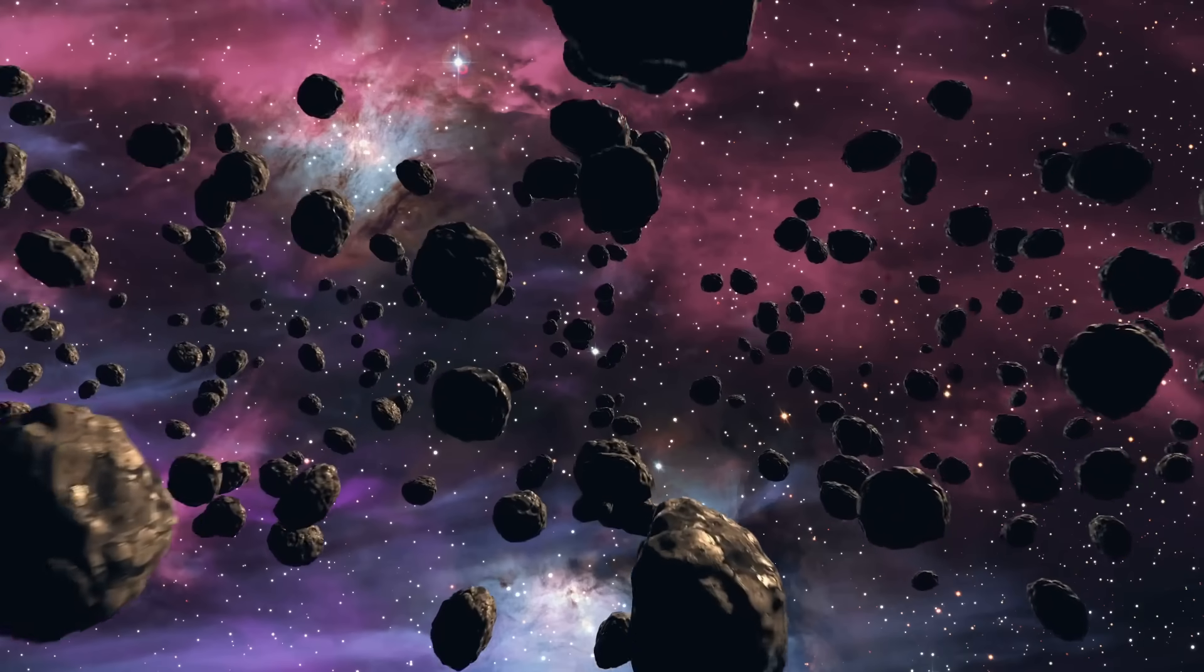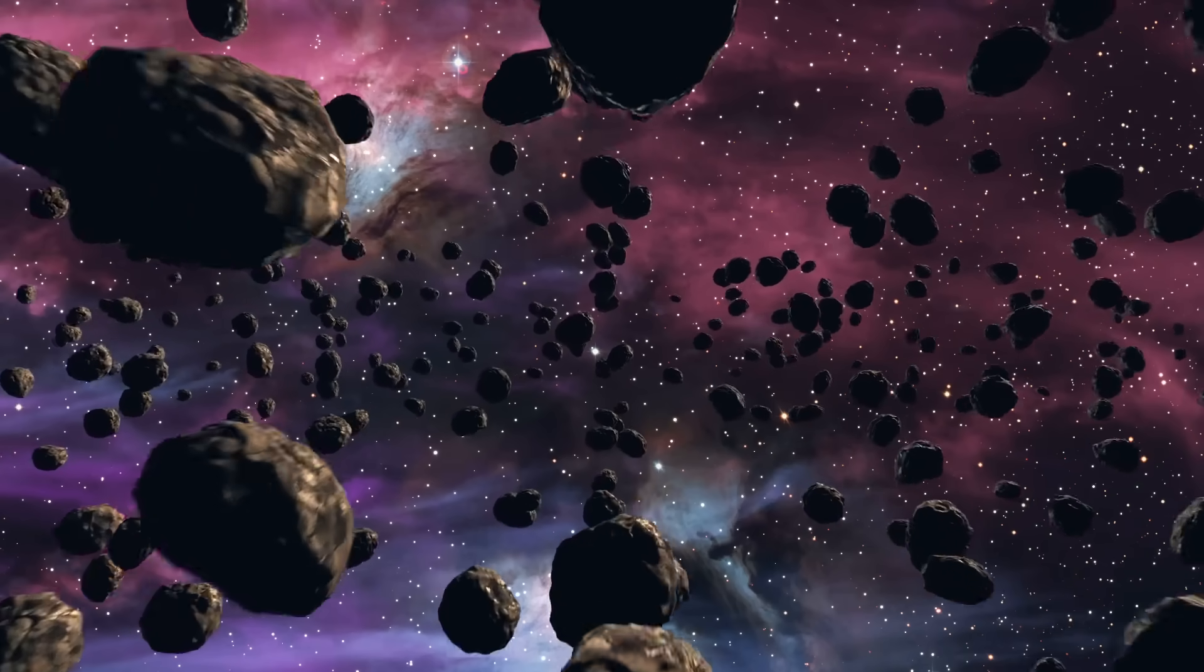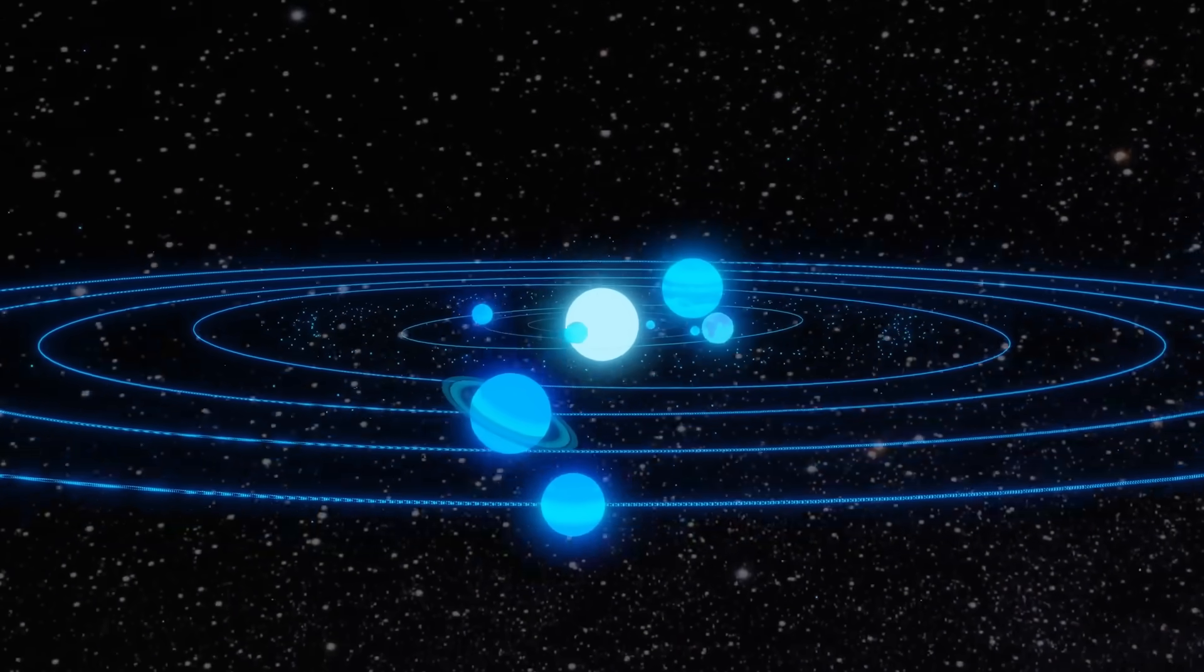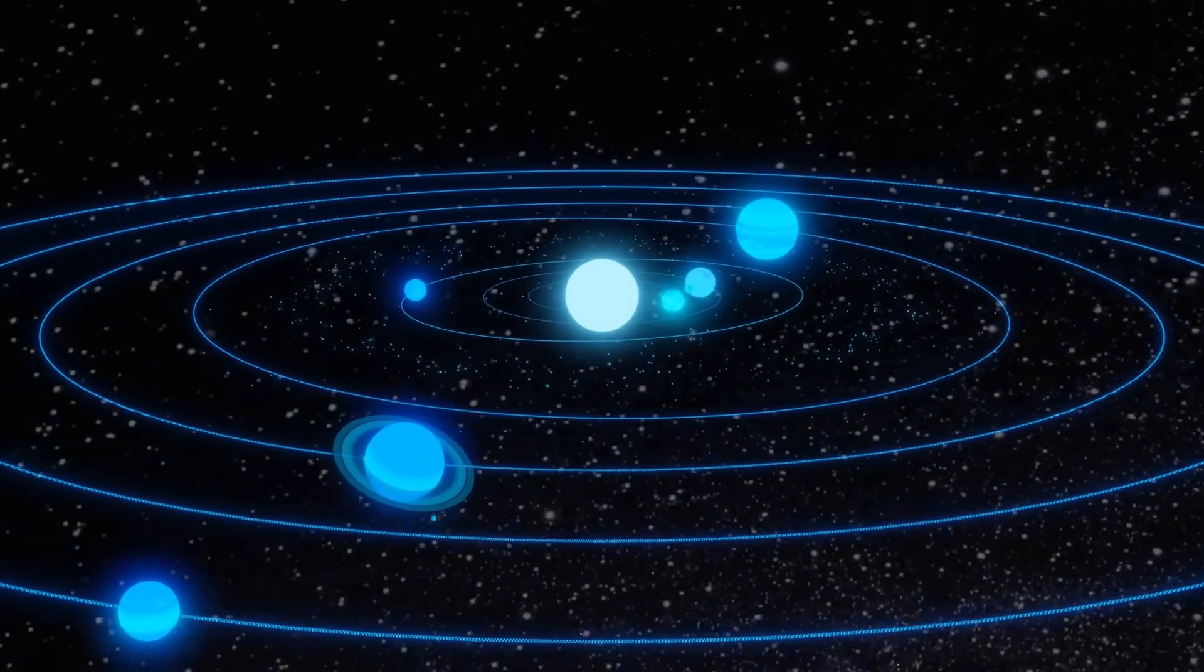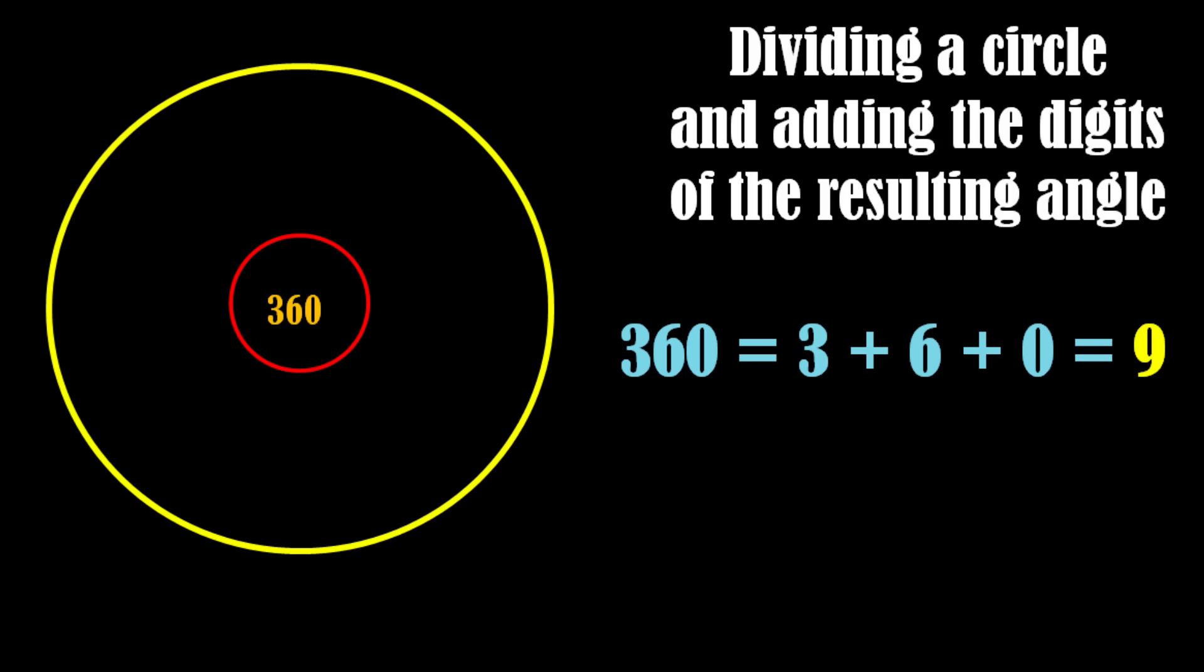Now let me show you how powerful the number 9 is and how it is present everywhere in the universe. Let's start dividing a circle and see the sum of digits of the resulting angle. As we know that a full circle makes an angle of 360 degrees at its center. If we add the digits of 360, we get number 9.